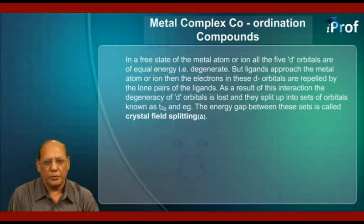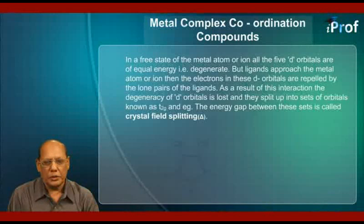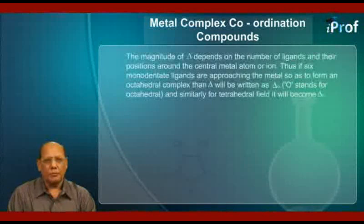In the free state of the metal atom or ion, all five d-orbitals are of equal energy, that is, degenerate. But when ligands approach the metal atom or ion, the electrons in these d-orbitals are repelled by the lone pairs of the ligands. As a result of this interaction, the degeneracy of d-orbitals is lost, and they split up into sets of orbitals known as t2g and eg. The energy gap between these sets is called crystal field splitting, delta. The magnitude of delta depends on the number of ligands and their positions around the central metal atom or ion.